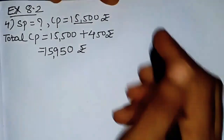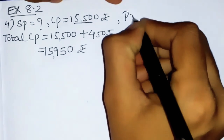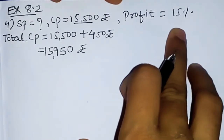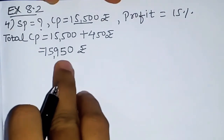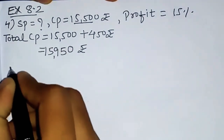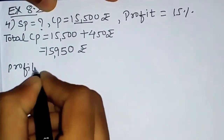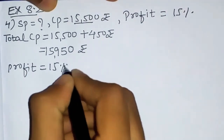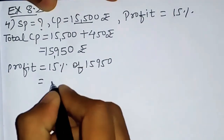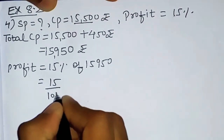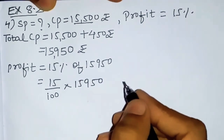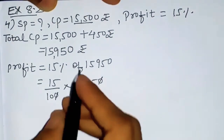Profit percentage is also given — 15%. This 15% profit is on ₹15,950. First we will find out the profit in rupees. Profit equals 15% of ₹15,950, which means 15 upon 100, multiplied by 15,950. We will do cancellation: zeros cancel, then simplify — 5 threes are 15 and 5 twos are 10, leaving 3 × 1595 divided by 2.